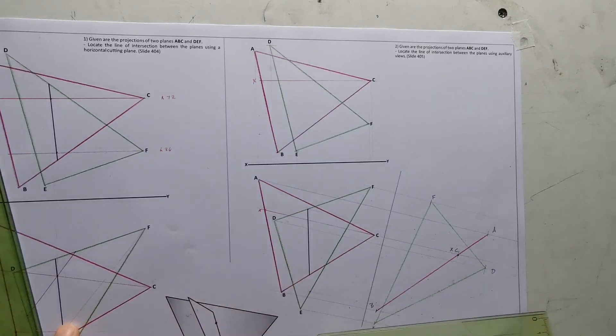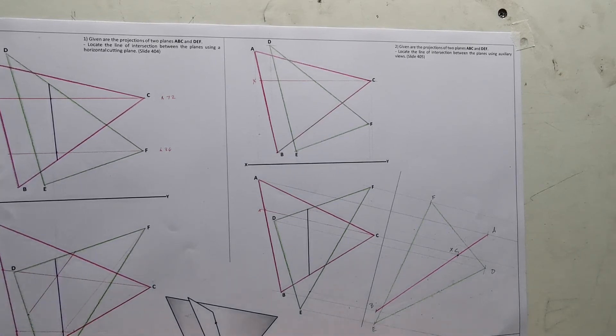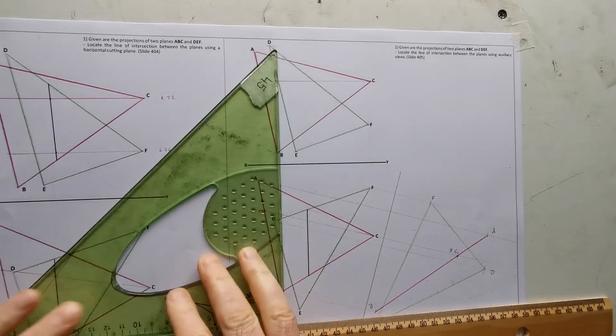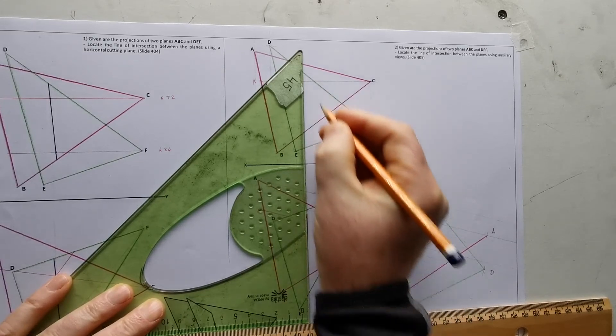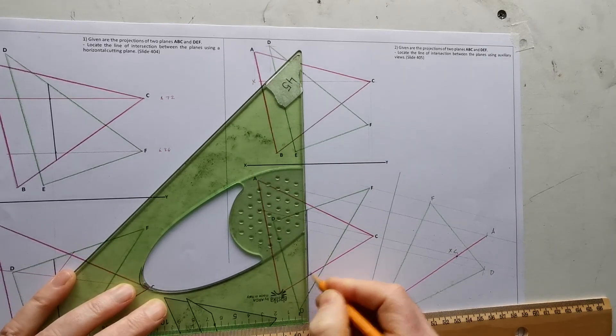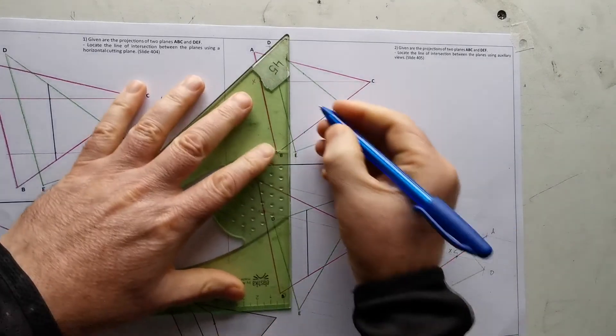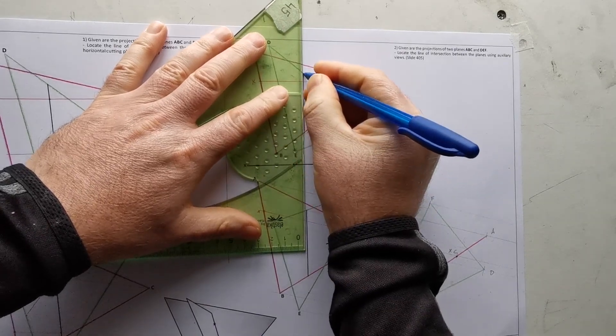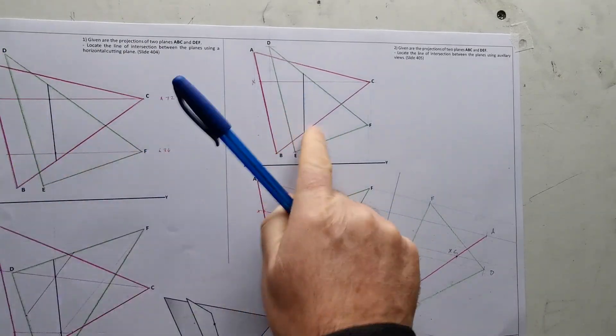So you can see that is the same as over here. It's a different way of establishing the same thing, the line of intersection, but it stays within the lines. And just project that now to elevation. So I know one end of the line of intersection is on DF and the other end is on BC. So there is my line of intersection, same as the last one as well.